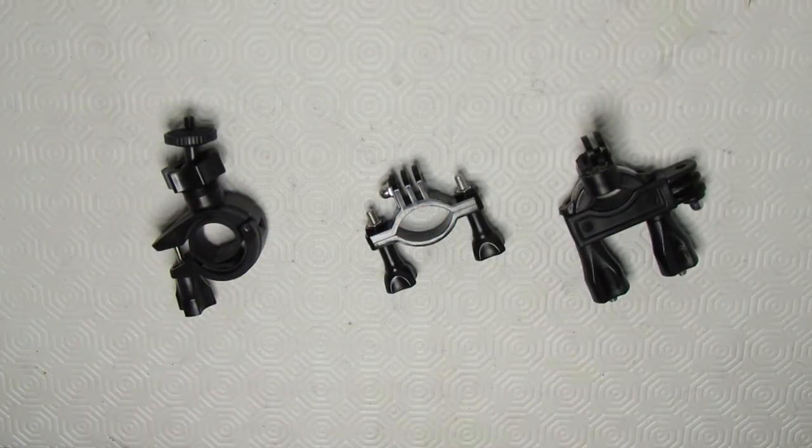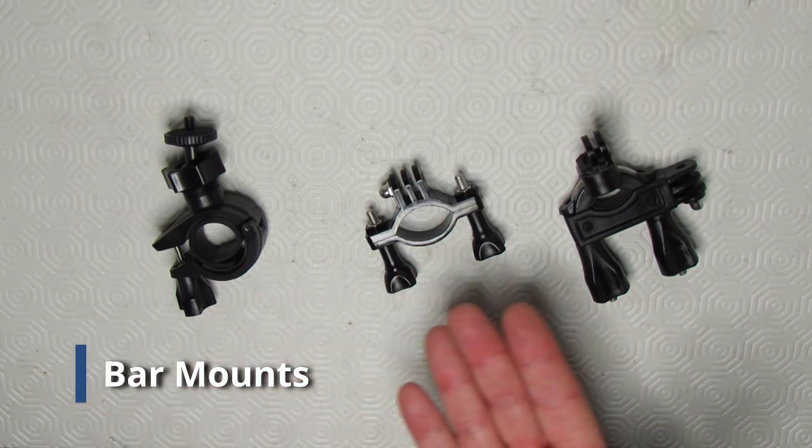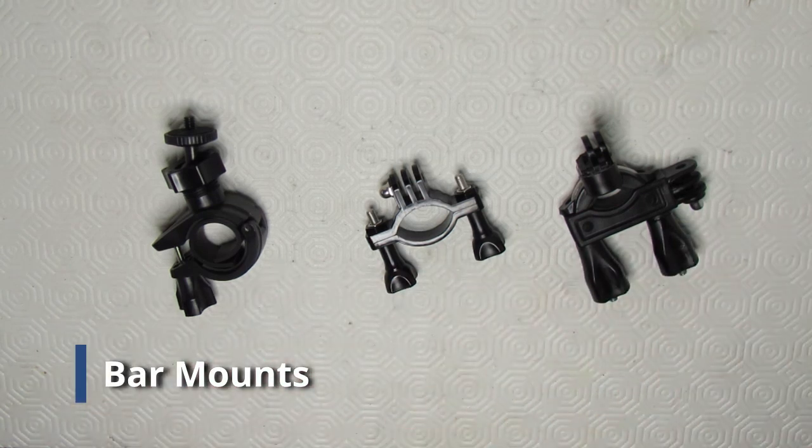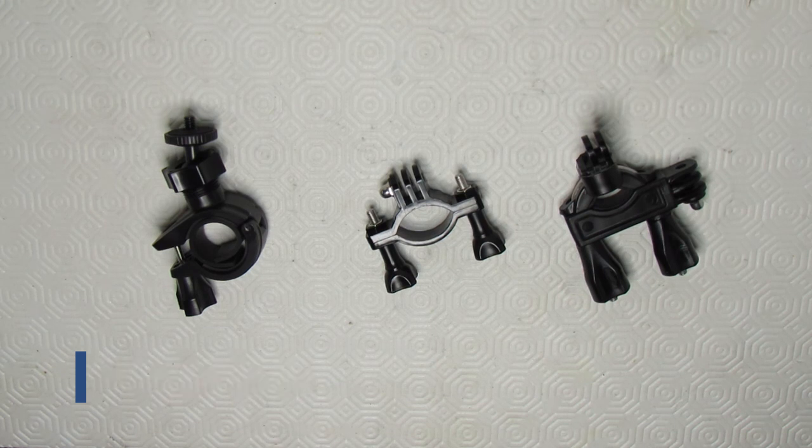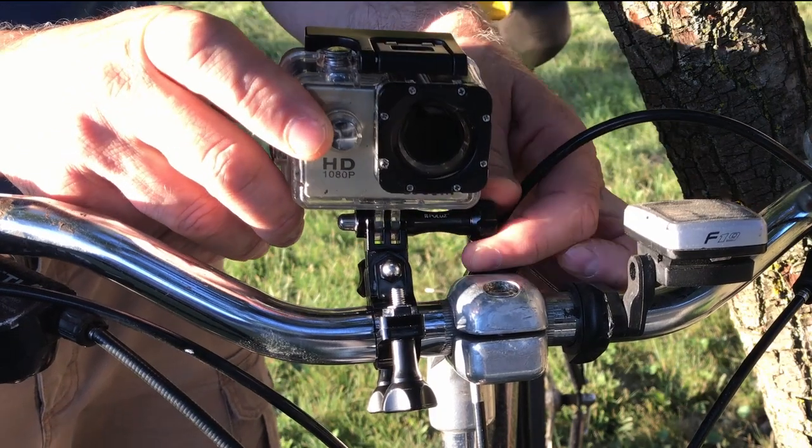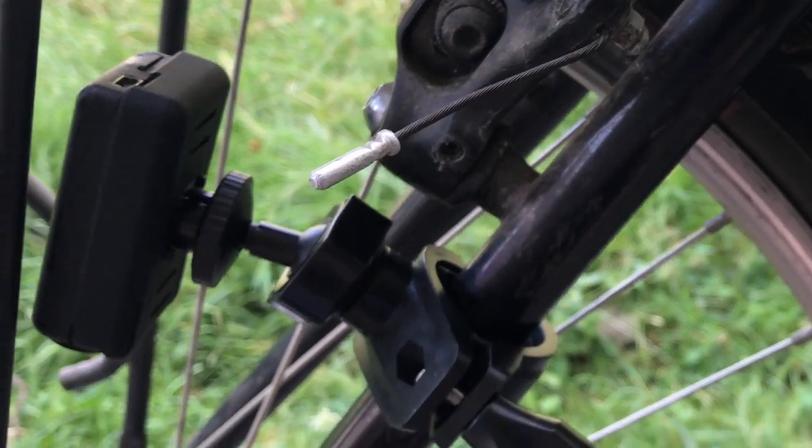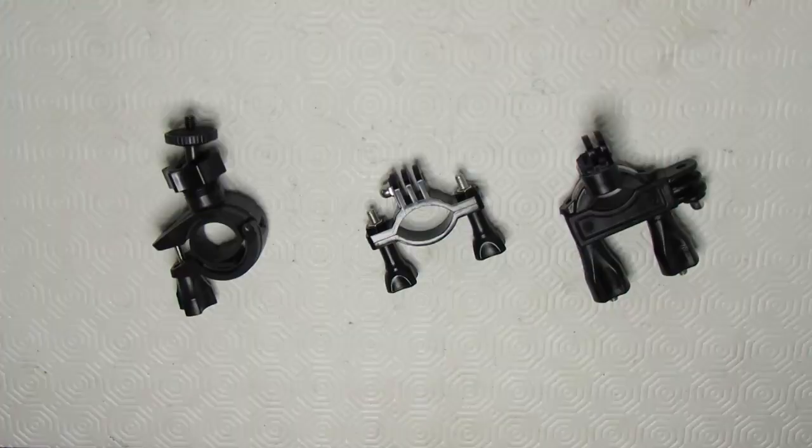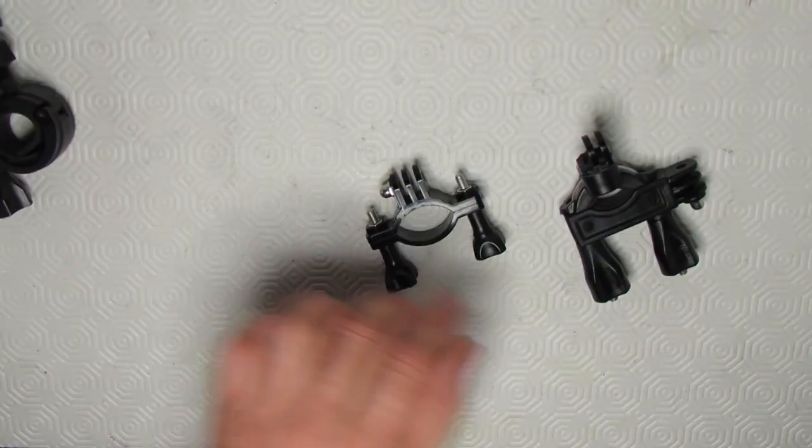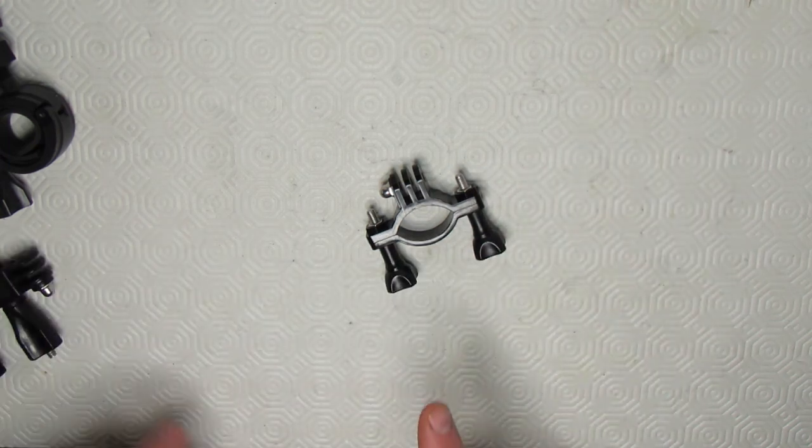The next set of mounts we're going to discuss are bar mounts. And we have a smorgasbord of bar mounts here. These are plastic versions of bar mounts. Usually you'll put them on your handlebars or you'll put them on your seat post. You can even put them on the top tube. Now let's look at each one of them individually as each of them has a different strength.